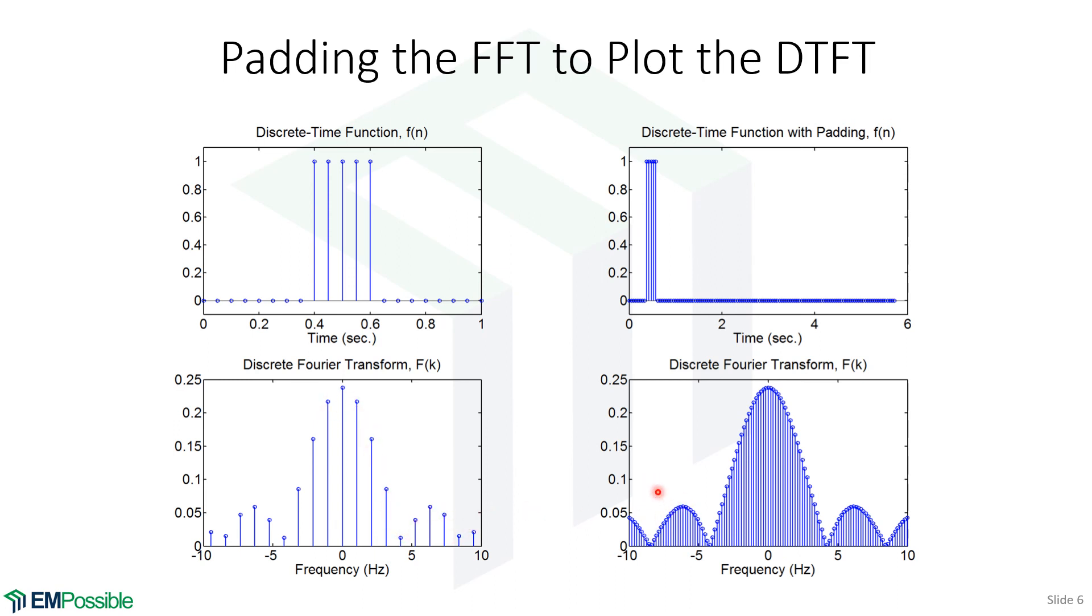Now I mentioned this before and I'll mention it again. There is not more information here. All of the information we need is over here in the original discrete Fourier transform. All we've done is fill in points in between to make it look smoother and more pleasing to the eye. But all the information we need was in that original plot.